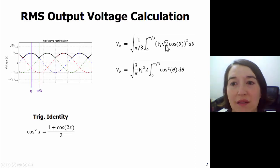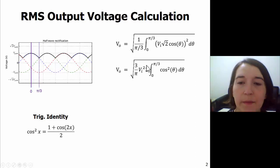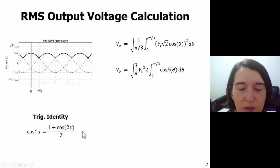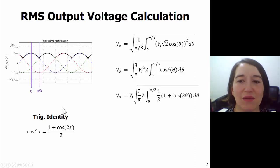Let's take out the constants here, move them to the front, and now we have this cosine squared. We have this wonderful trig identity down here, and you can replace the cosine squared with this because it's a little bit friendlier to integrate.